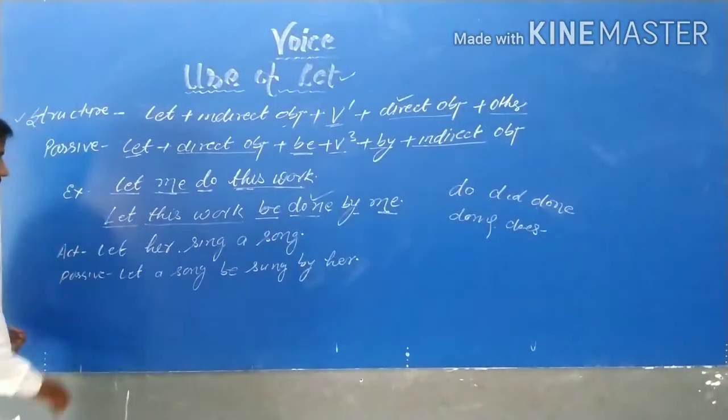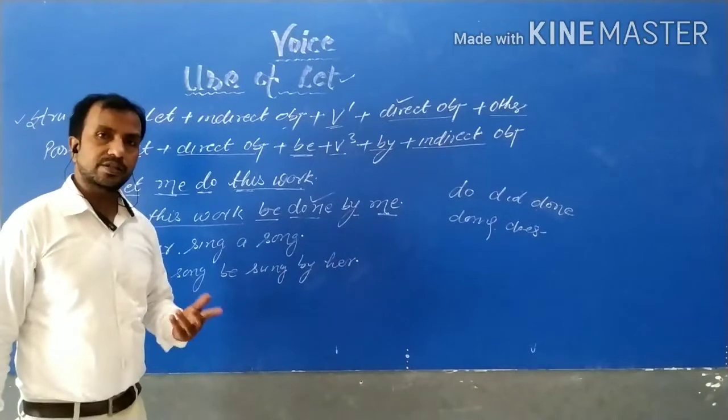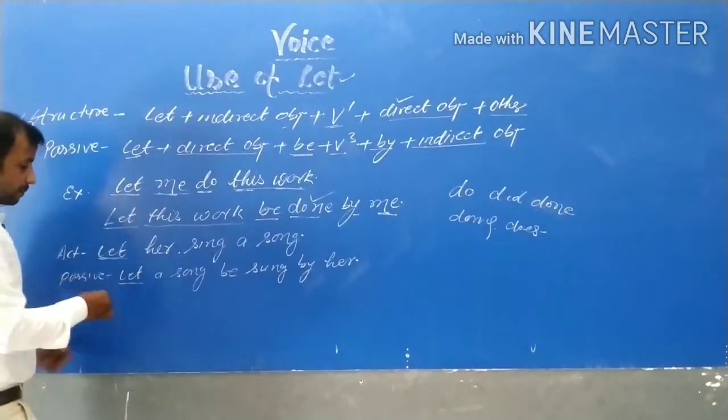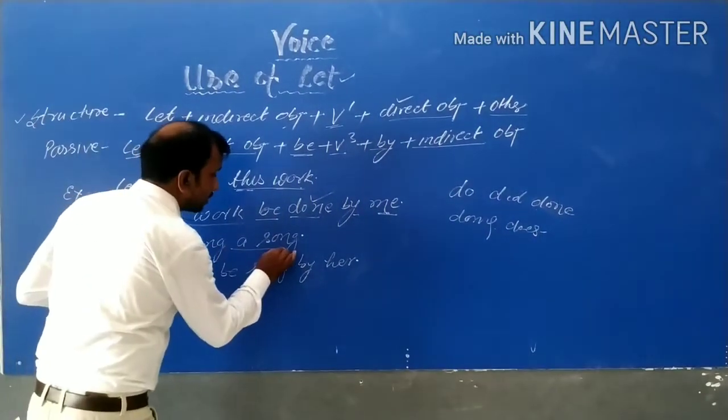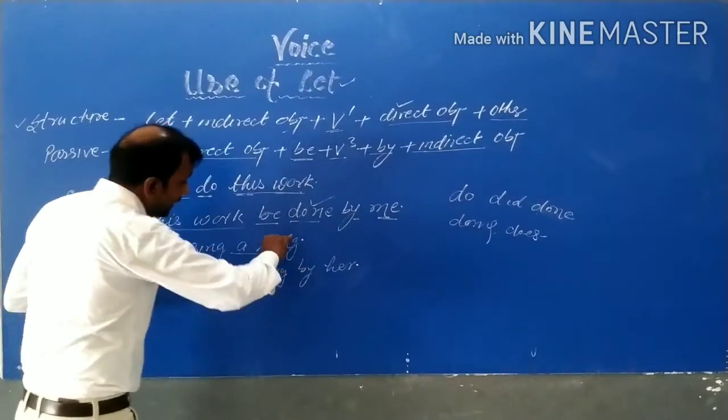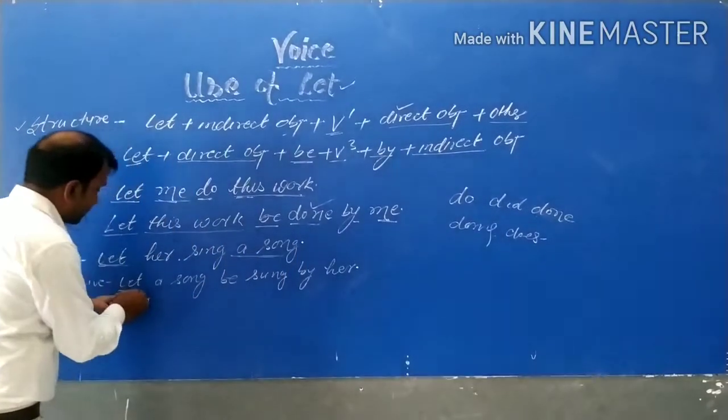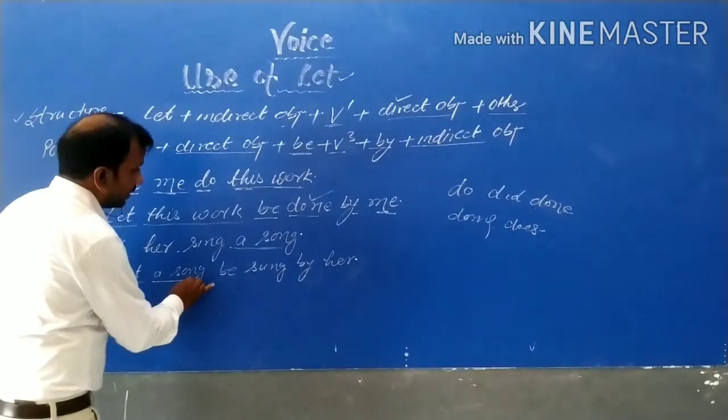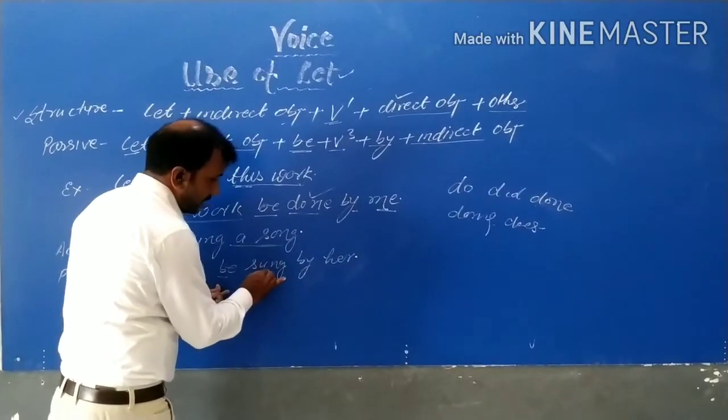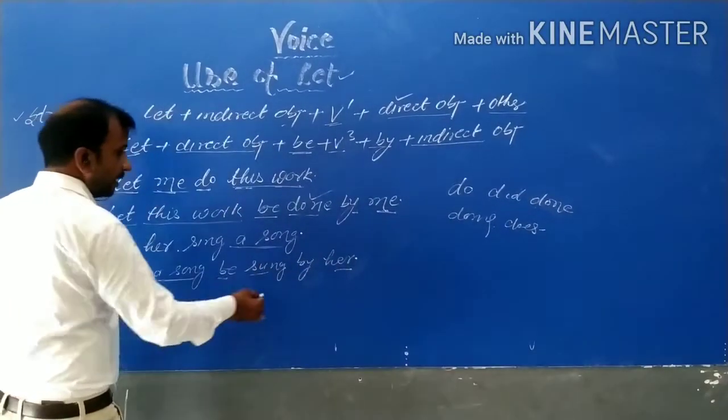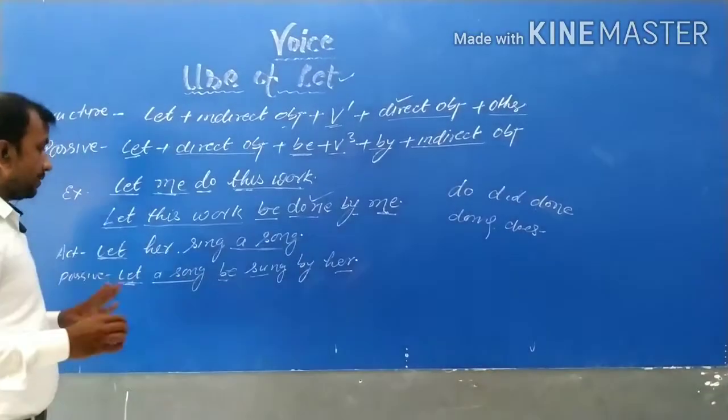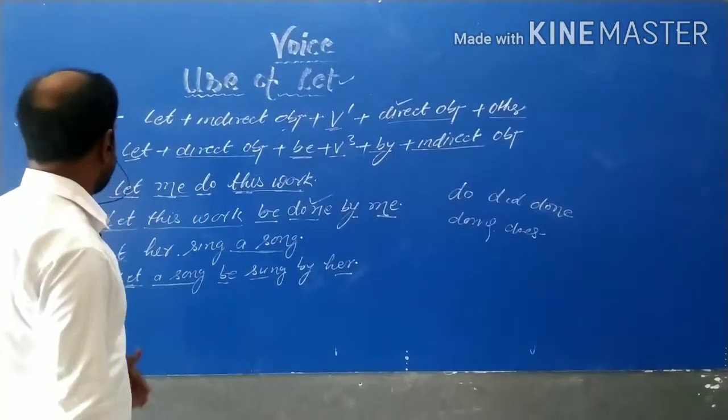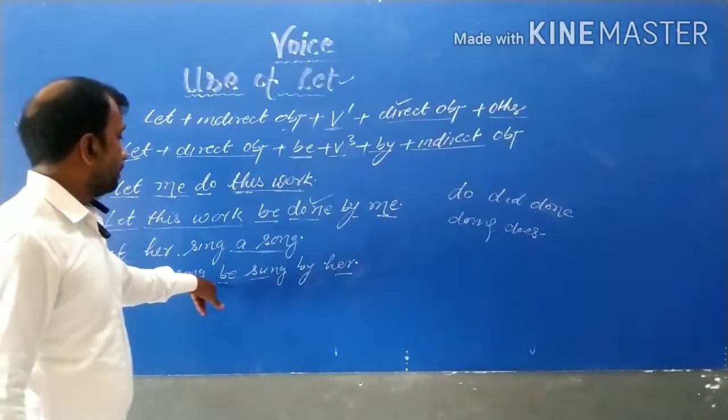One more example is given. Let her sing a song. So let will be written at its place. And then a song, it is known as direct object. And direct object will be written here just beside let. Let a song, then be and word of third form, sung. And her will be written by. So by her. The complete sentence or the complete passive voice will be after given sentence is let a song be sung by her.